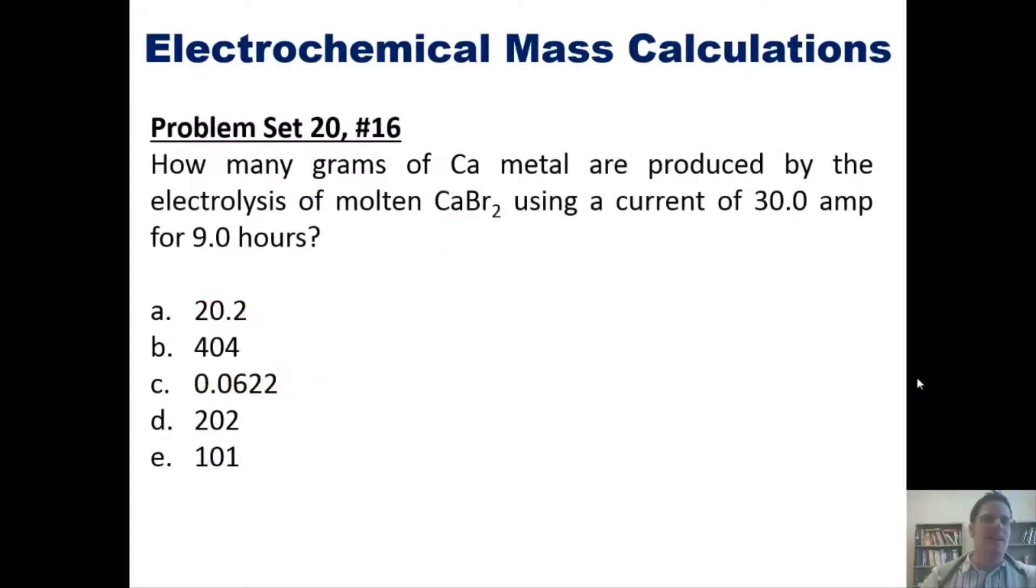All right, let's take a look at a problem. How many grams of calcium metal are produced by the electrolysis of molten calcium bromide using a current of 30 amps for nine hours? To be honest, using the stuff that I just told you a second ago, I would not expect any of you guys to have a clue how to do this. Fortunately, if you wish you can click the link here to a separate video in which I show you how to do it on the board. In fact, it applies all the stuff that I just outlined.